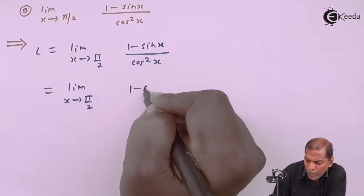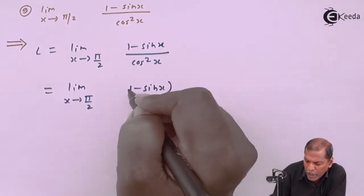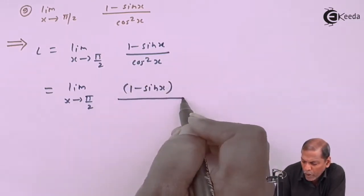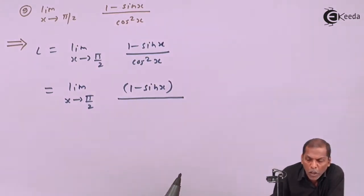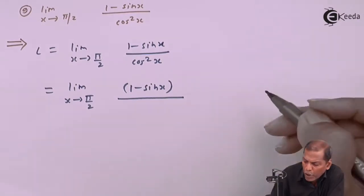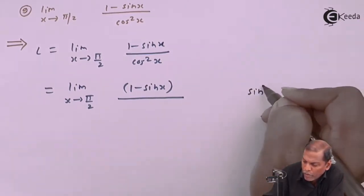We write (1 - sin x) as is in the numerator. Now for cos²x, we use the identity that sin²x + cos²x = 1.